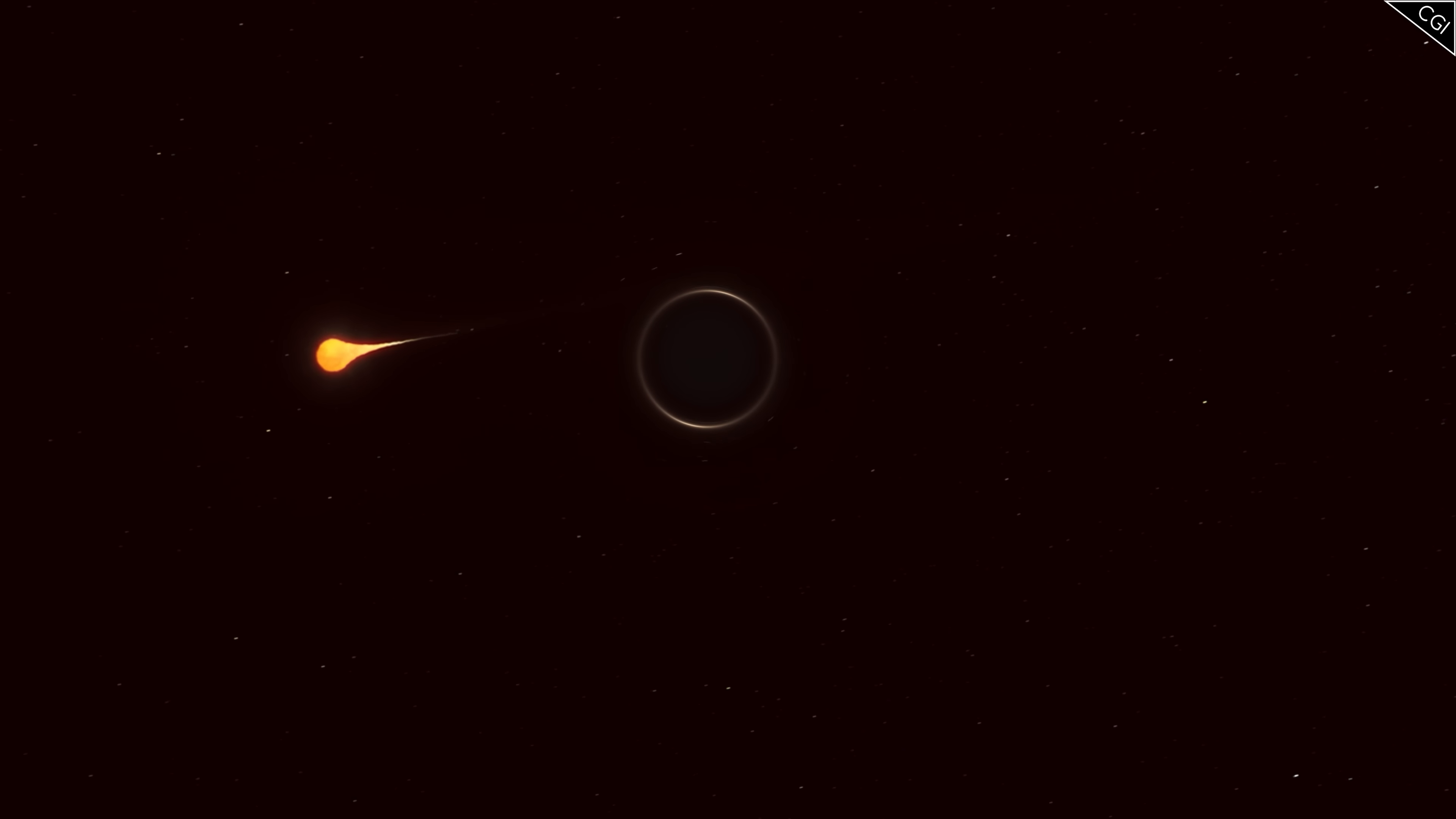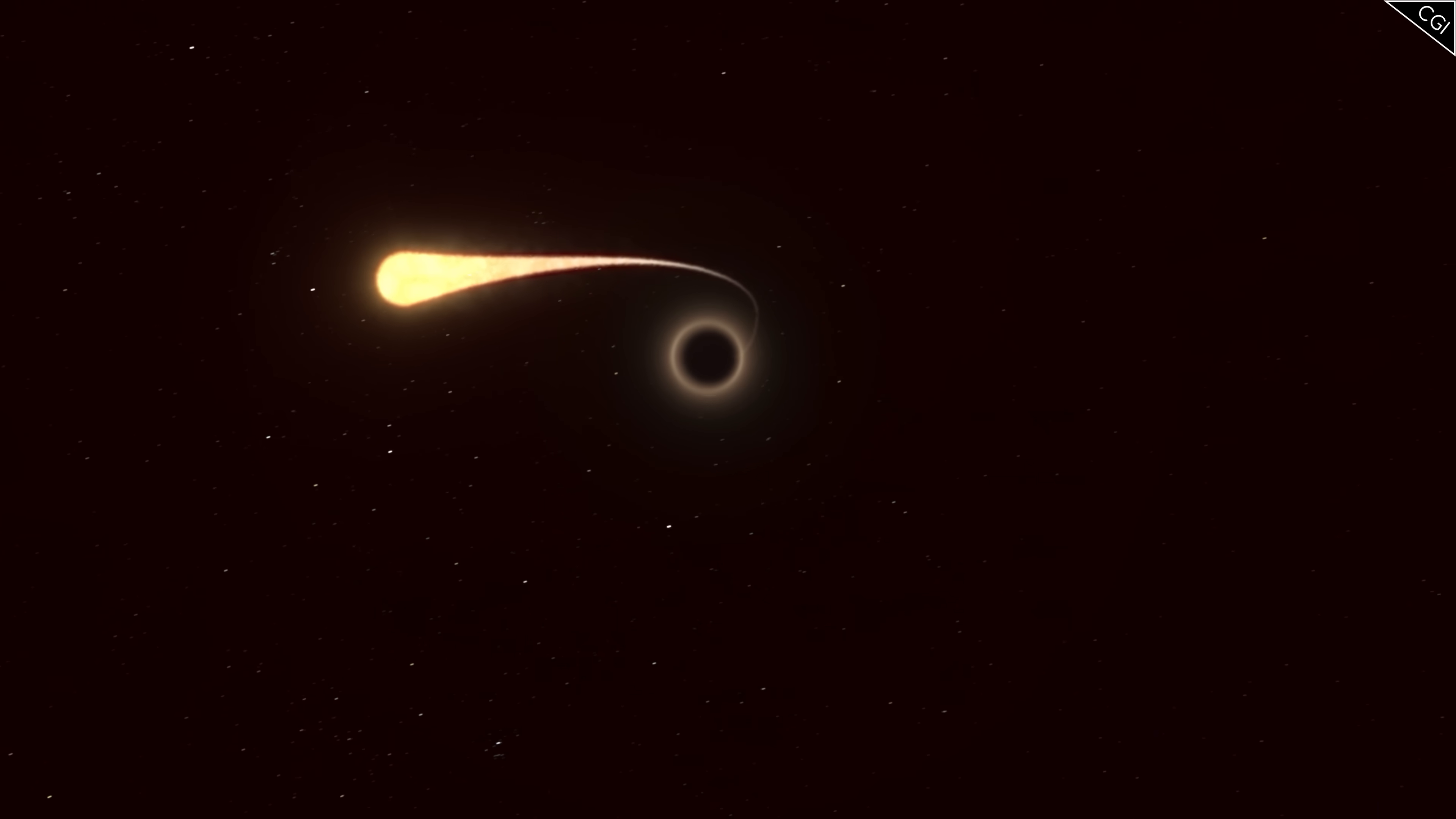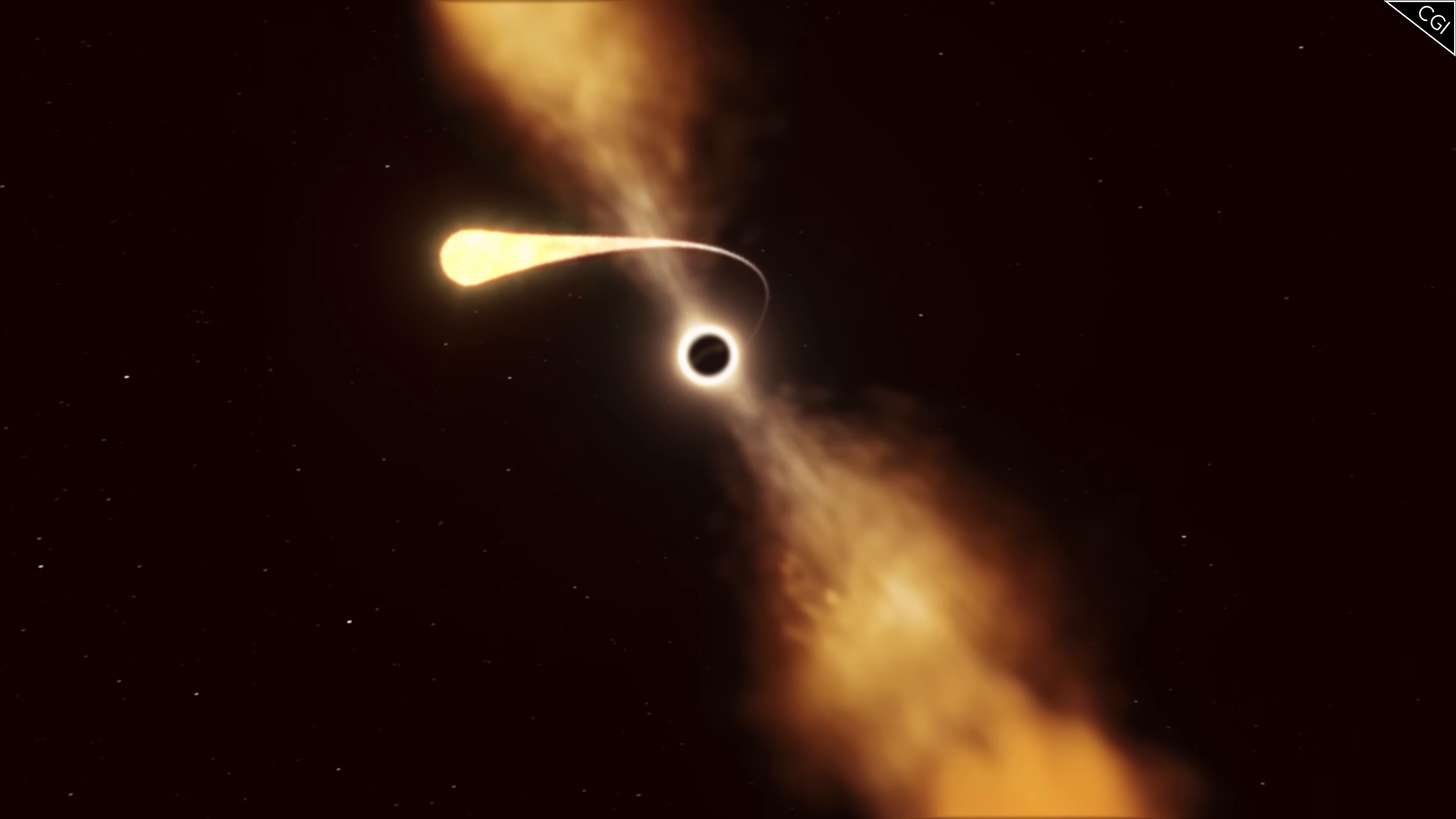However, when mass, such as an unlucky star, strays too close to the black hole's gravitational pull, it can be torn apart by the vast forces at work, and sucked towards the black hole's centre.